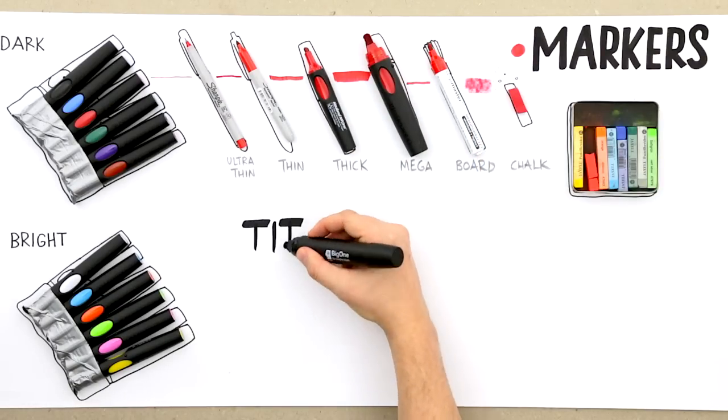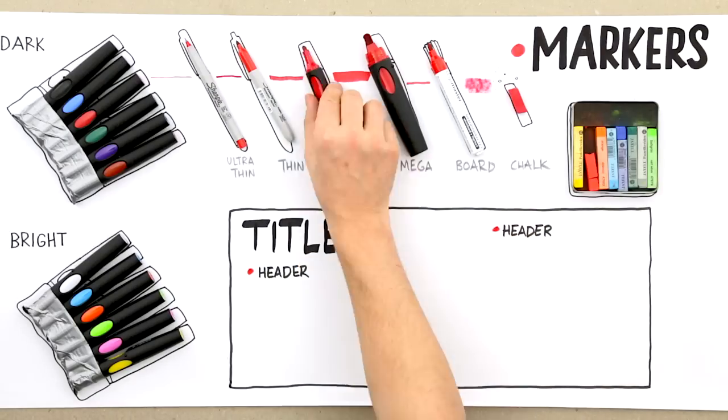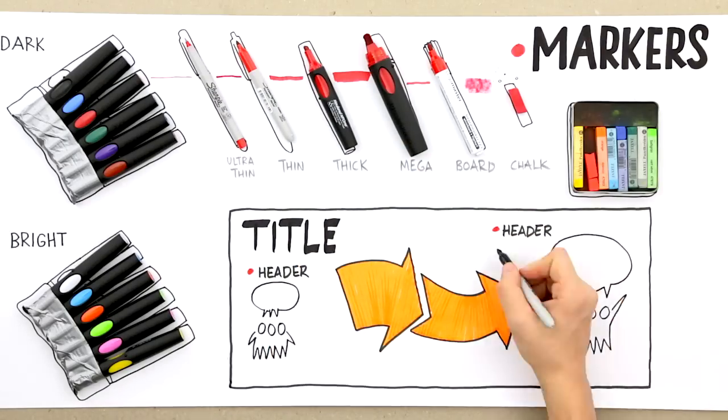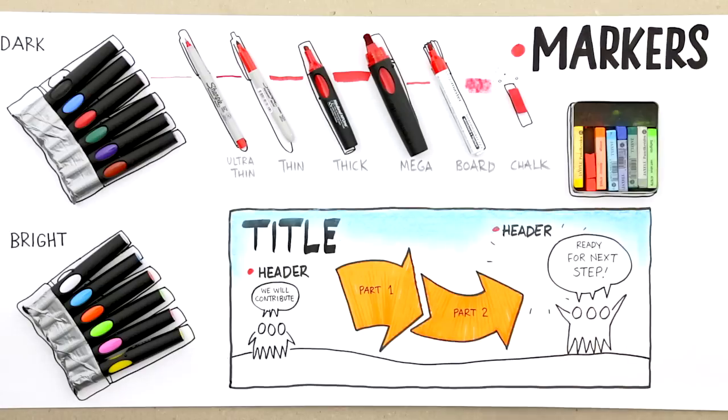Use mega for your title and to fill out large surfaces, thick markers for frames, big drawings and headers. Ultra thin or thin for quotes, icons and small drawings, and chalks for background colors and shadows.